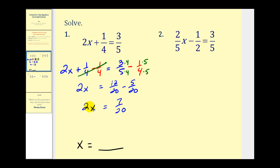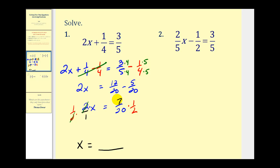Here we have to be a little careful. The 2 is attached by multiplication, so the opposite would be dividing by 2. But since we're in fraction form, it might be helpful to multiply by the reciprocal instead. Dividing by two over one is the same as multiplying by one over two. On the left, the two simplifies out, leaving us with just x. On the right, nothing simplifies, so we multiply across: seven over forty is our solution.